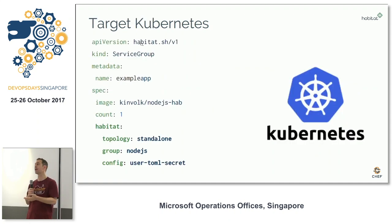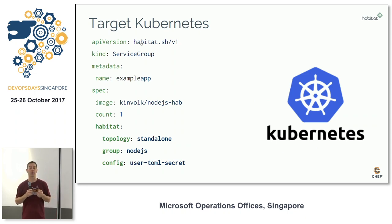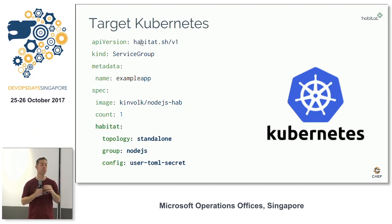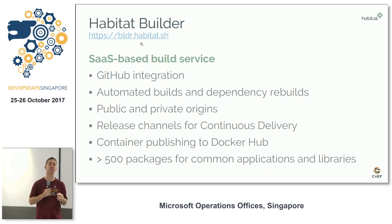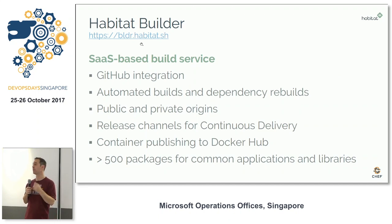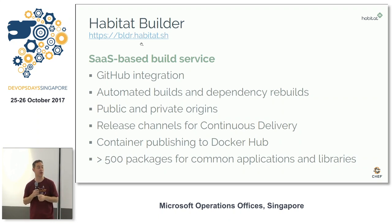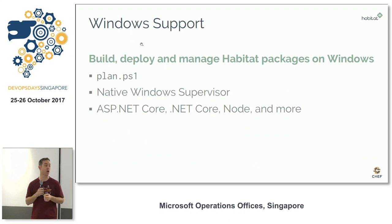Kubernetes is the logical place that things seem to be headed towards. We have a native Kubernetes operator that understands topology and groups and brings Habitat-built packages straight in. We just launched a build service — a SaaS offering that allows you to take your git commits and automatically generate builds of your packages and push those to the Docker Hub any time your application or its dependencies change. We have over 500 packages already on the build repository.